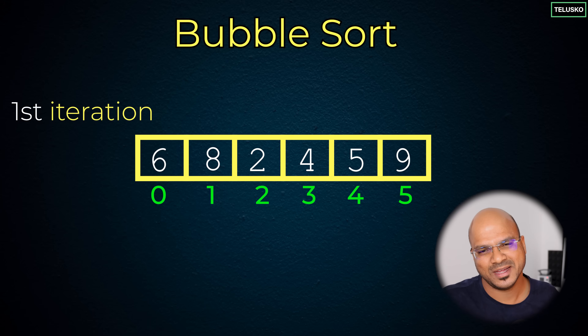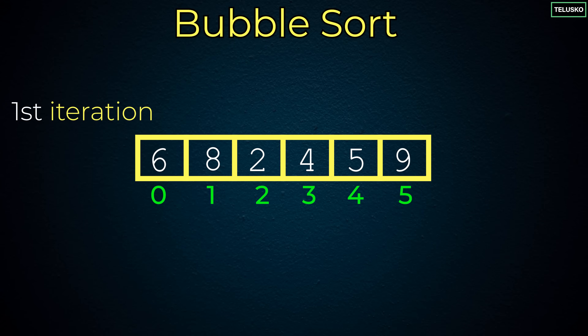But is it sorted? Unfortunately, not. You need to do this operation multiple times until it's fully sorted — this depends on the size of your array. The first 5 values are still unsorted; the last one is done, so we don't have to touch it. In the first iteration you go 6 times, the second iteration 5 times, the third 4 times. After the first iteration, we got the value 9 at the end.